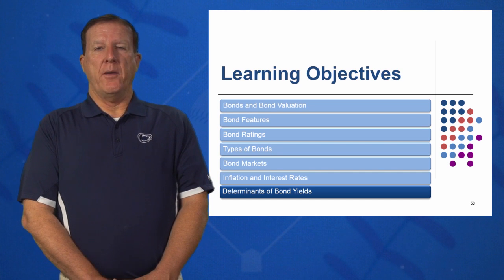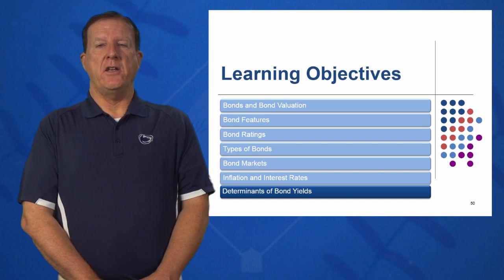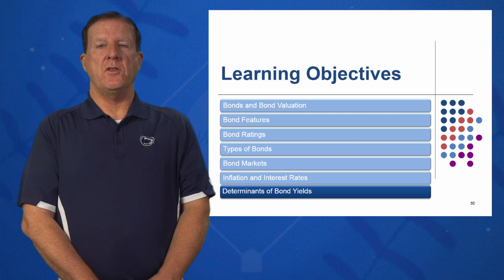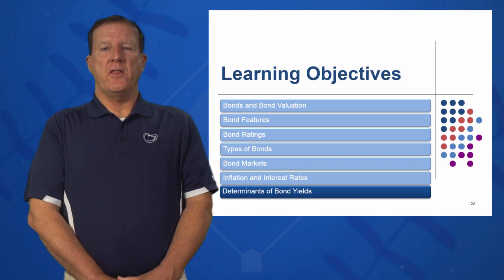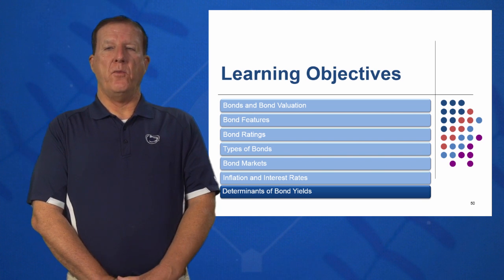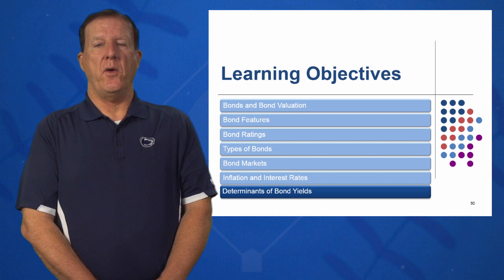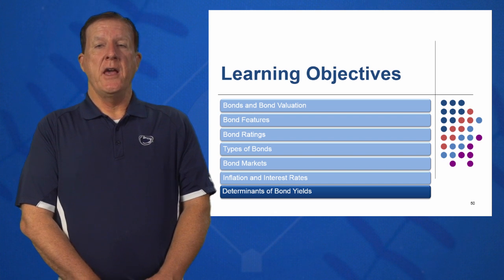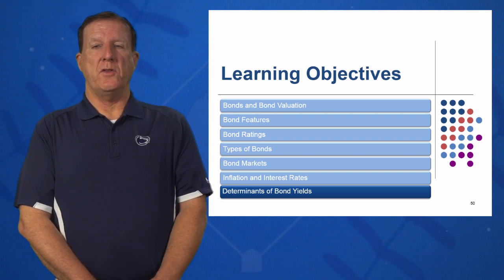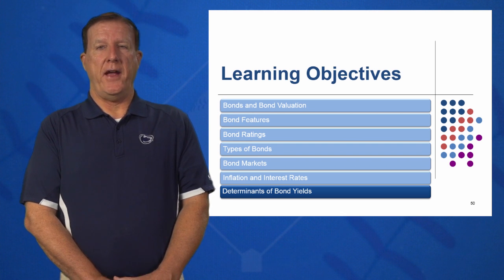In the seventh and final learning objective, we're going to look at determinants of bond yields. What determines the price of a bond? What determines the yield of a bond? What factors in the environment are going on? Basically, the determinants of bond yields are composed of the elements in the Fischer effect.